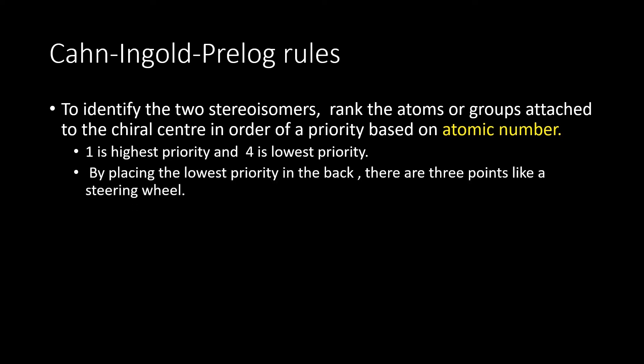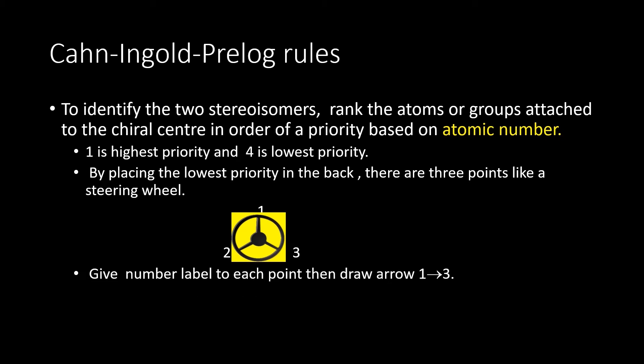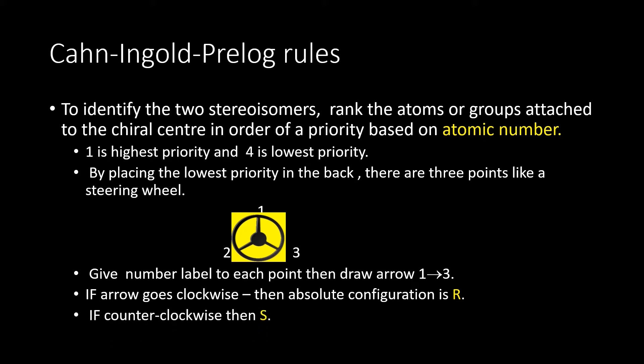Rotate the molecule so that the lowest priority group is in the back. There are now three points, like points on a steering wheel. Draw an arrow starting at point one and finishing at point three. If the arrow goes clockwise, the absolute configuration is R; if it goes counterclockwise, it is S.